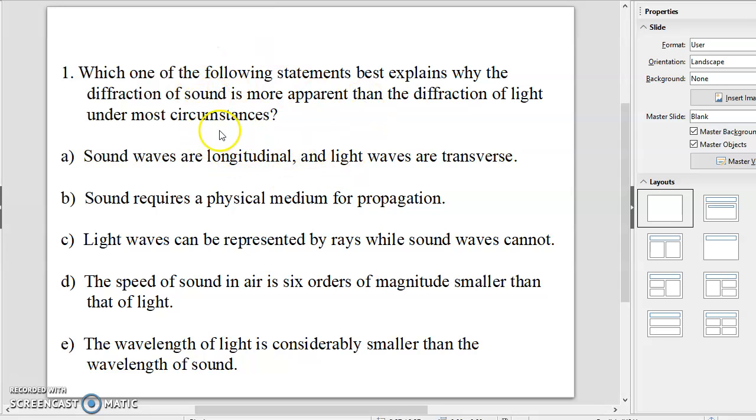The one everyone got wrong was this first one right here: which one of the following statements best explains why the diffraction of sound is more apparent than the diffraction of light under most circumstances? And the answer is A, sound waves are longitudinal and light waves are transverse. None of the other answers is correct. This is the only one that is correct there.